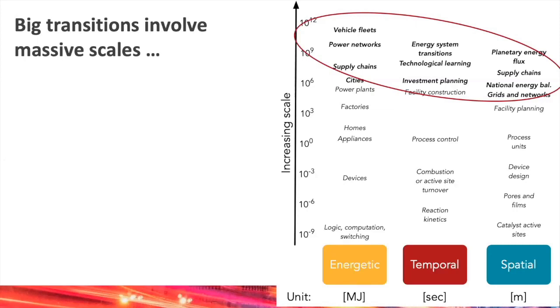And when I talk about massive scale here, that could happen along one of three axes. It could be energetic, so just the amount of energy that's involved, multiple power plants, whole fleets of vehicles.